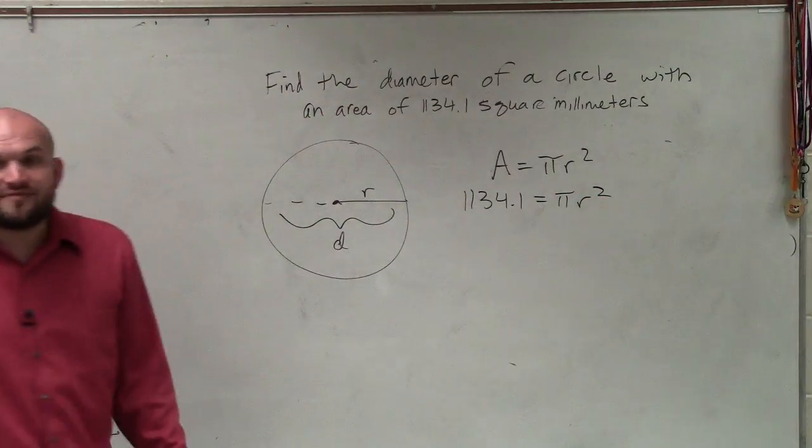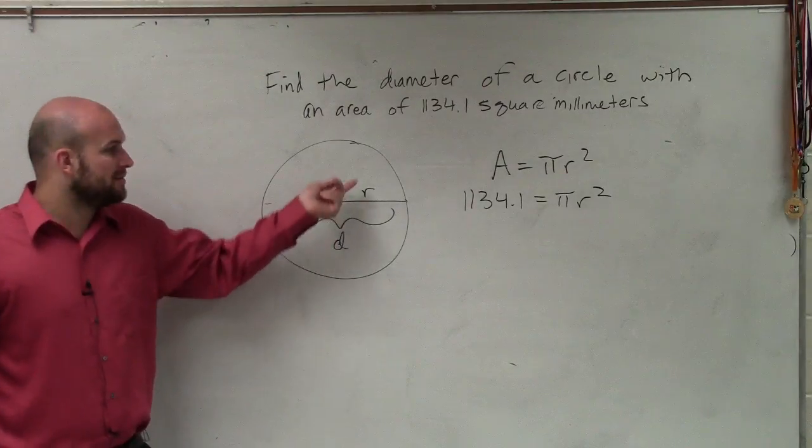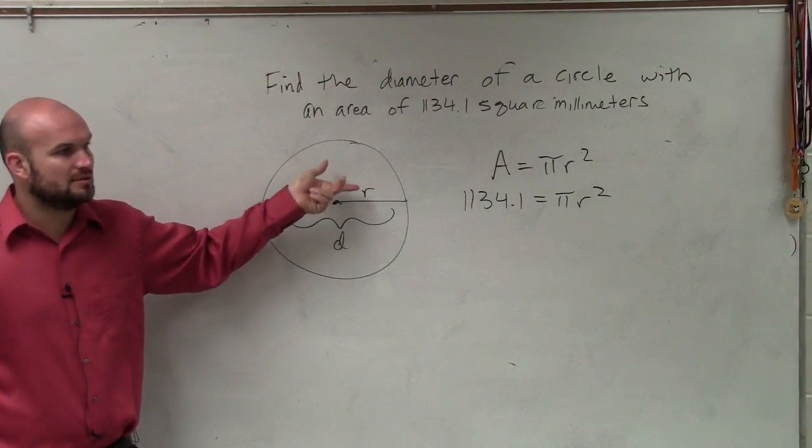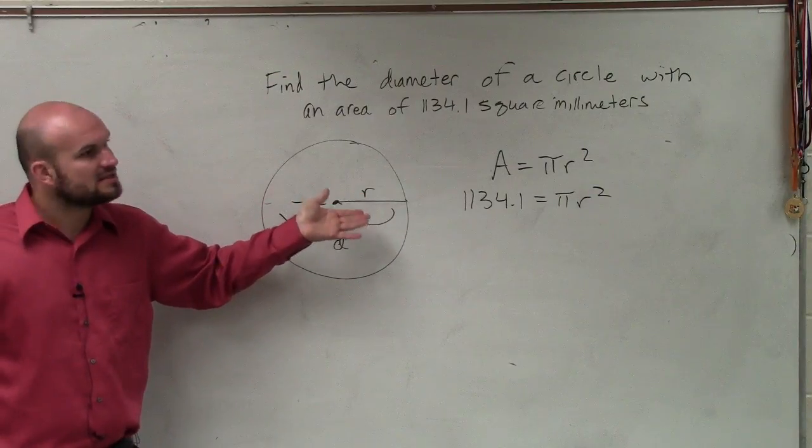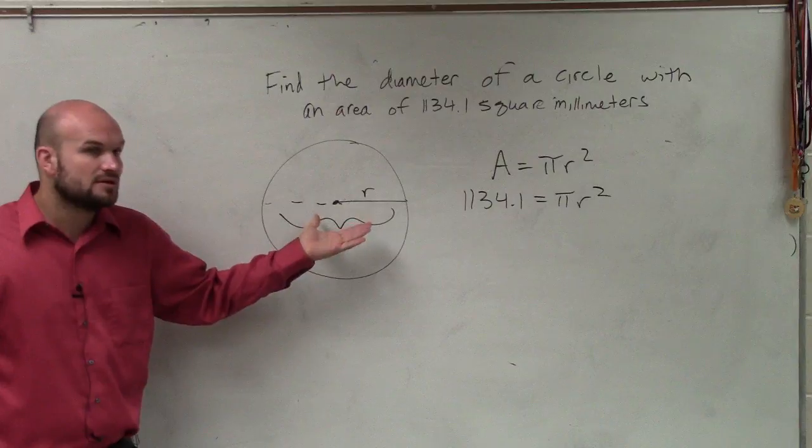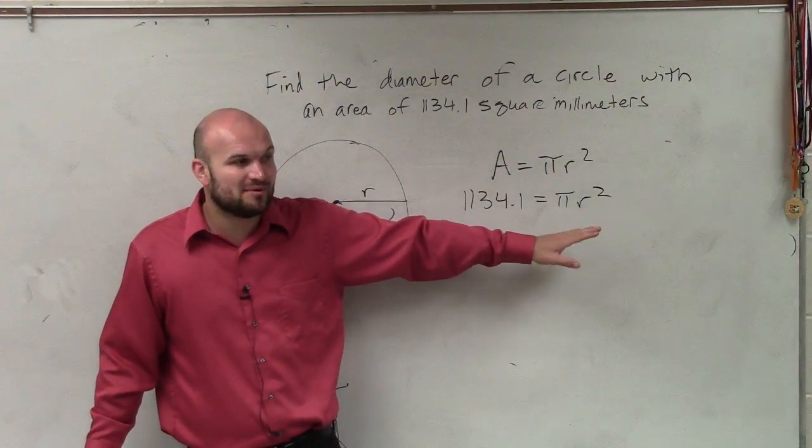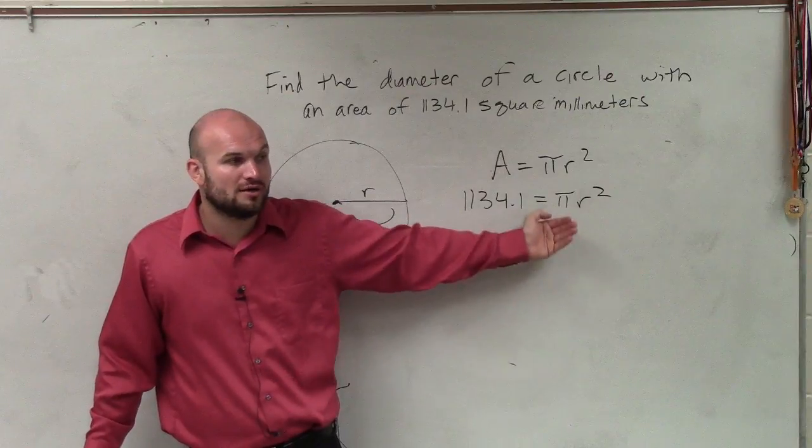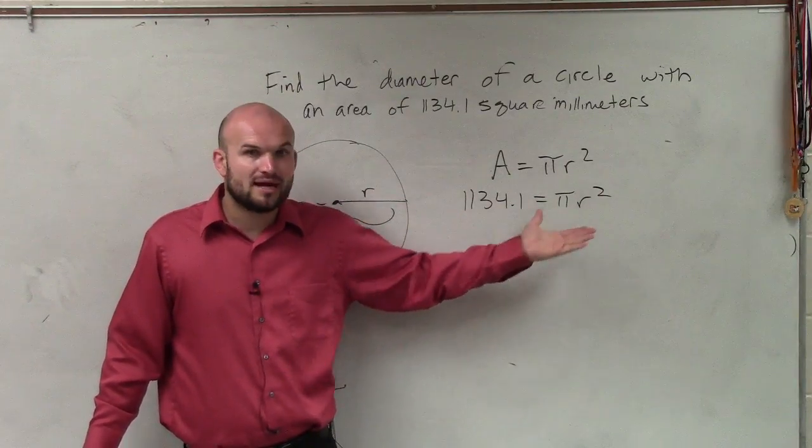Now, they're asking us to find d, which is our diameter. What is the relationship between our diameter and our radius, Damon? The diameter is twice the length of the radius, right? So then, Damon, would it make sense? If I find r, I can just double that to find d? Yeah. So let's find r.